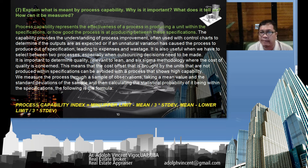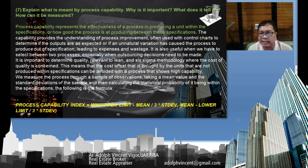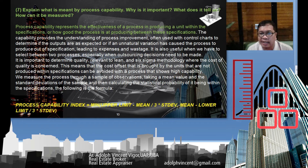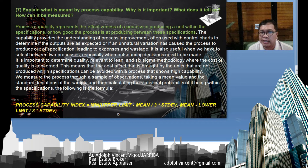The seventh question: explain what is meant by process capability, why it is important, what it tells us, and how we can measure it. Process capability represents the effectiveness of a process in producing a unit within specifications. It provides an understanding of process improvement and is often used with control charts to determine if outputs are as expected, or if an unnatural variation has caused the process to produce outside specifications, leading to expenses and wastage.